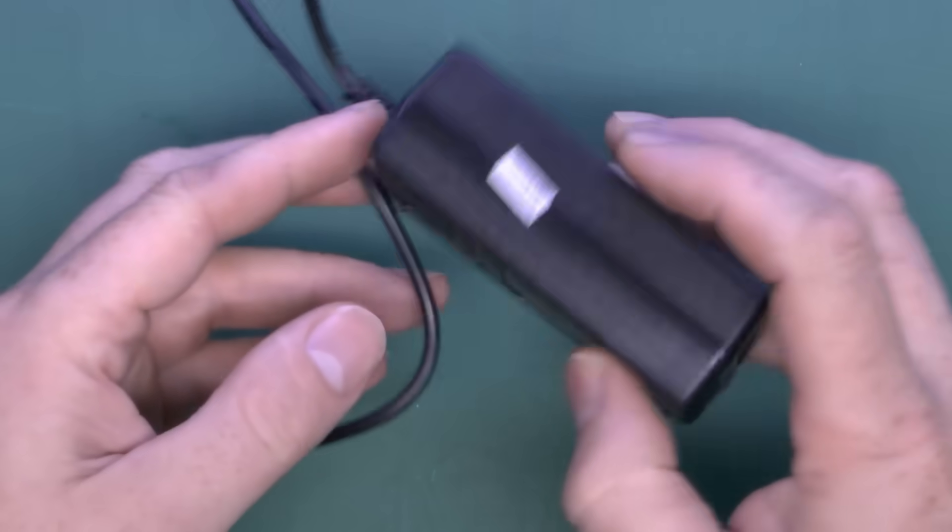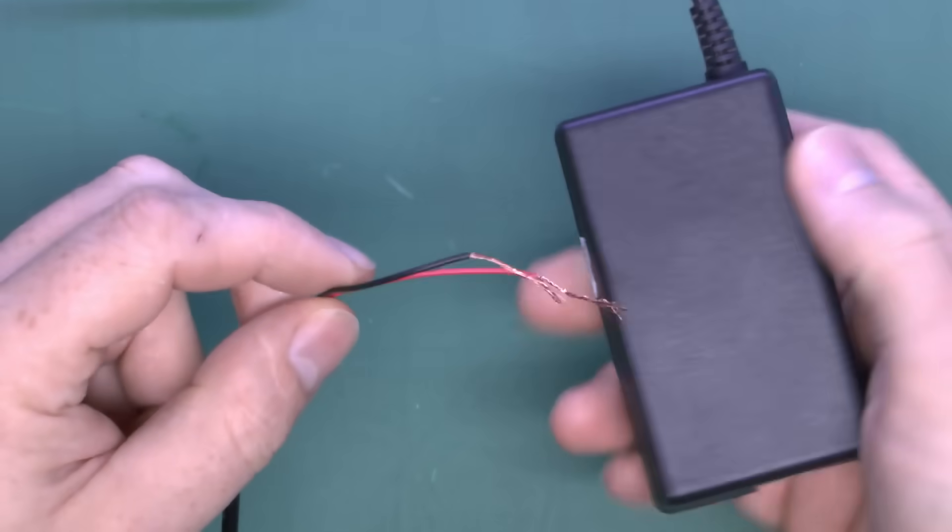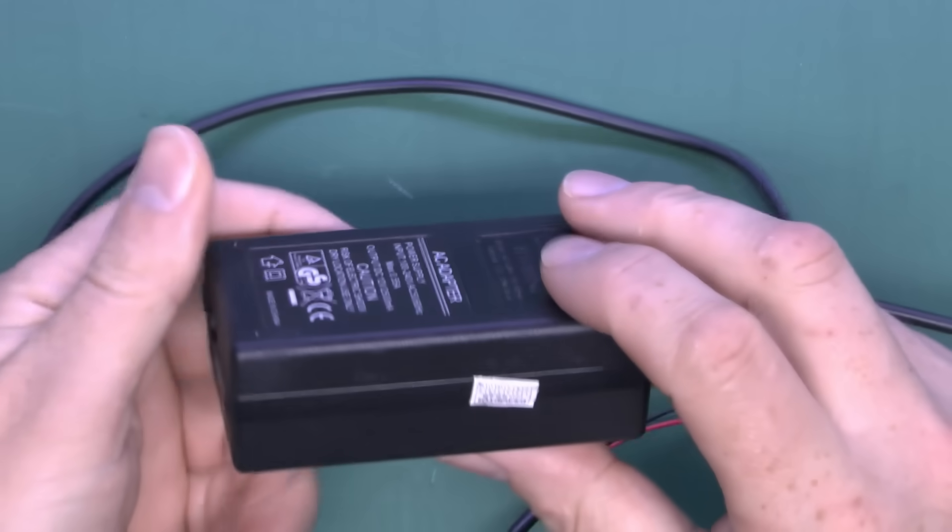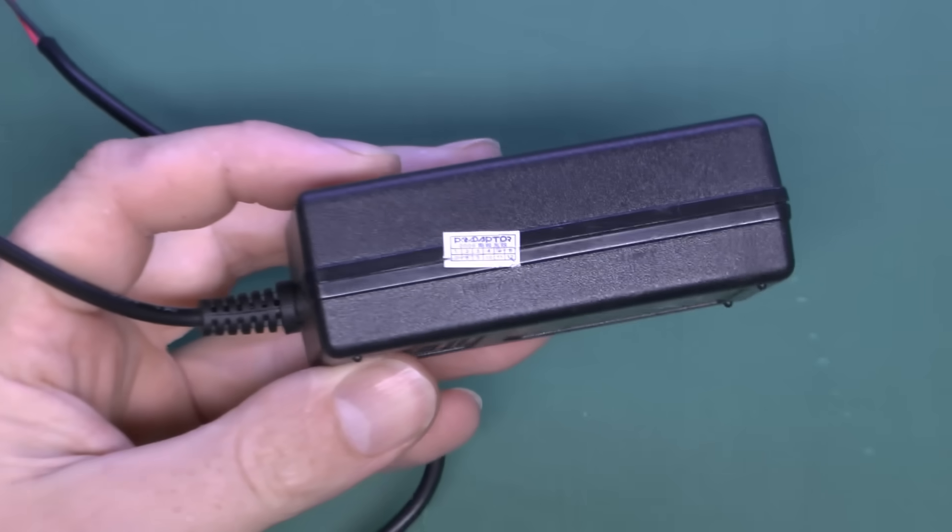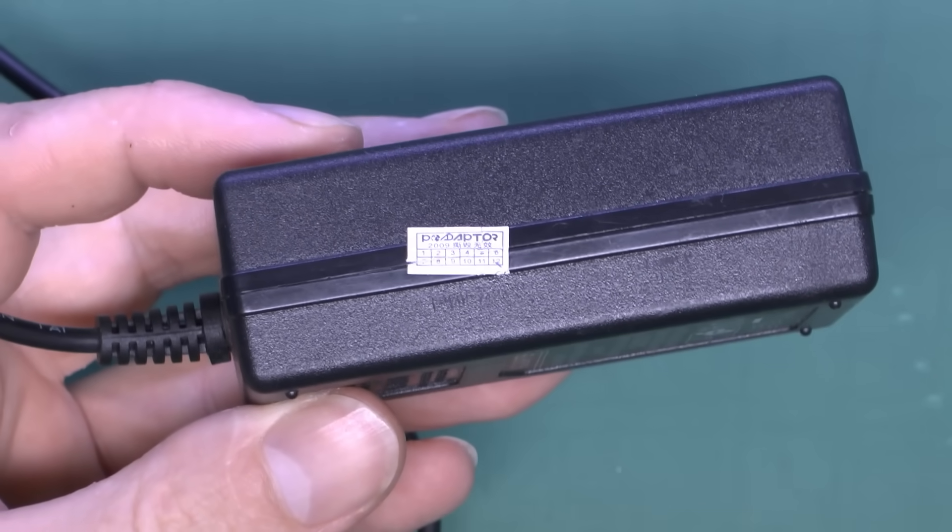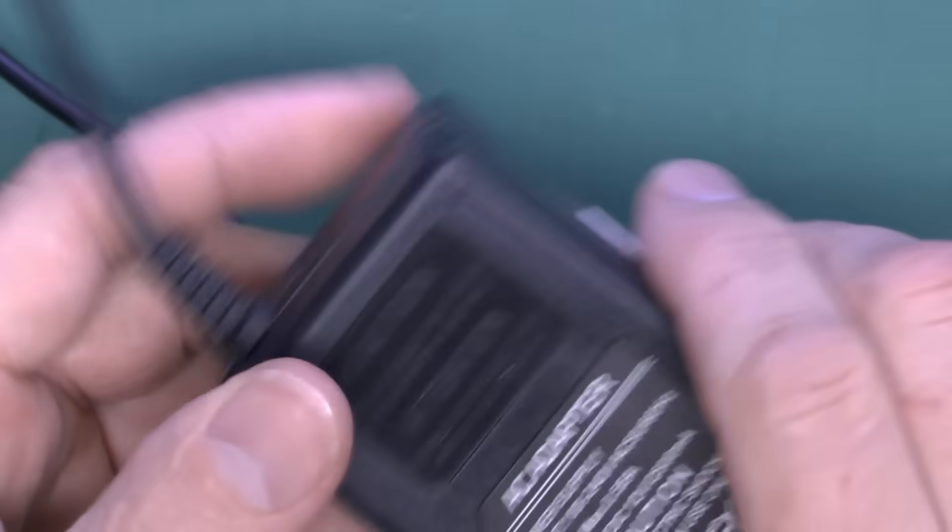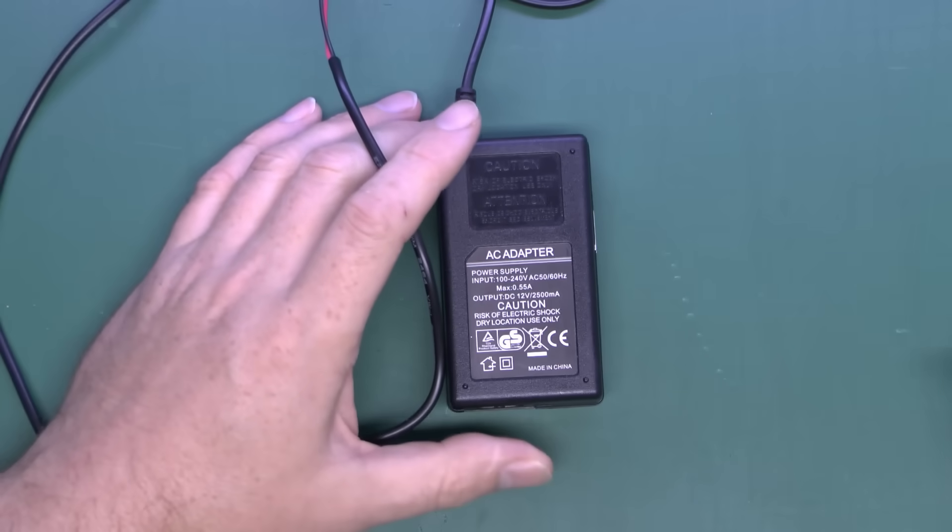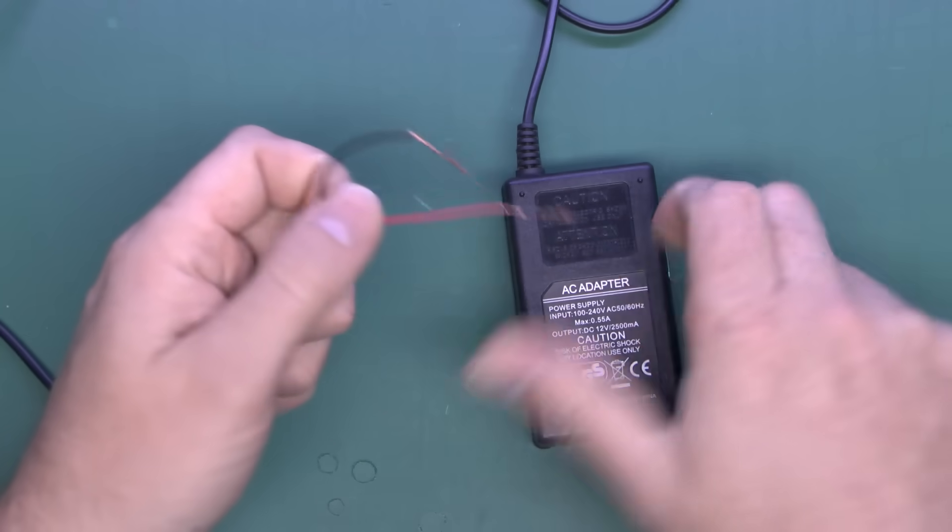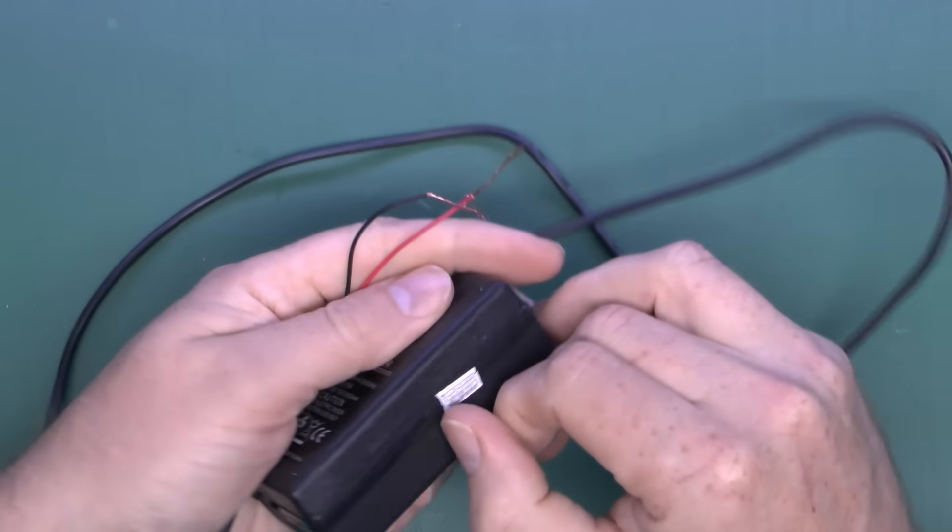This particular item was fitted to some LED lighting and was only fitted last year, 2015. But the label on the side actually says 2009, so we're not entirely clear why that would be. Obviously it's either been in stock a long time or this is just a label that's incorrect.